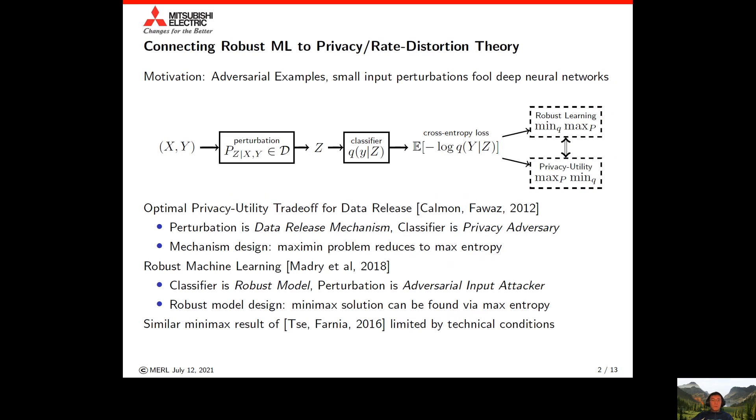The central theme of our work is exploring the theoretical connections between robust machine learning and privacy rate distortion theory. This is motivated by the problem of adversarial examples, where it has been shown that deep neural networks can be fooled by very small, even imperceptible input perturbations.